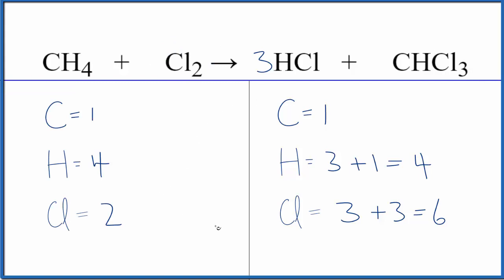And remember, we left this till last because now we need to get six chlorine. Three, two times three, that gives us six. And we're done, this equation is balanced.